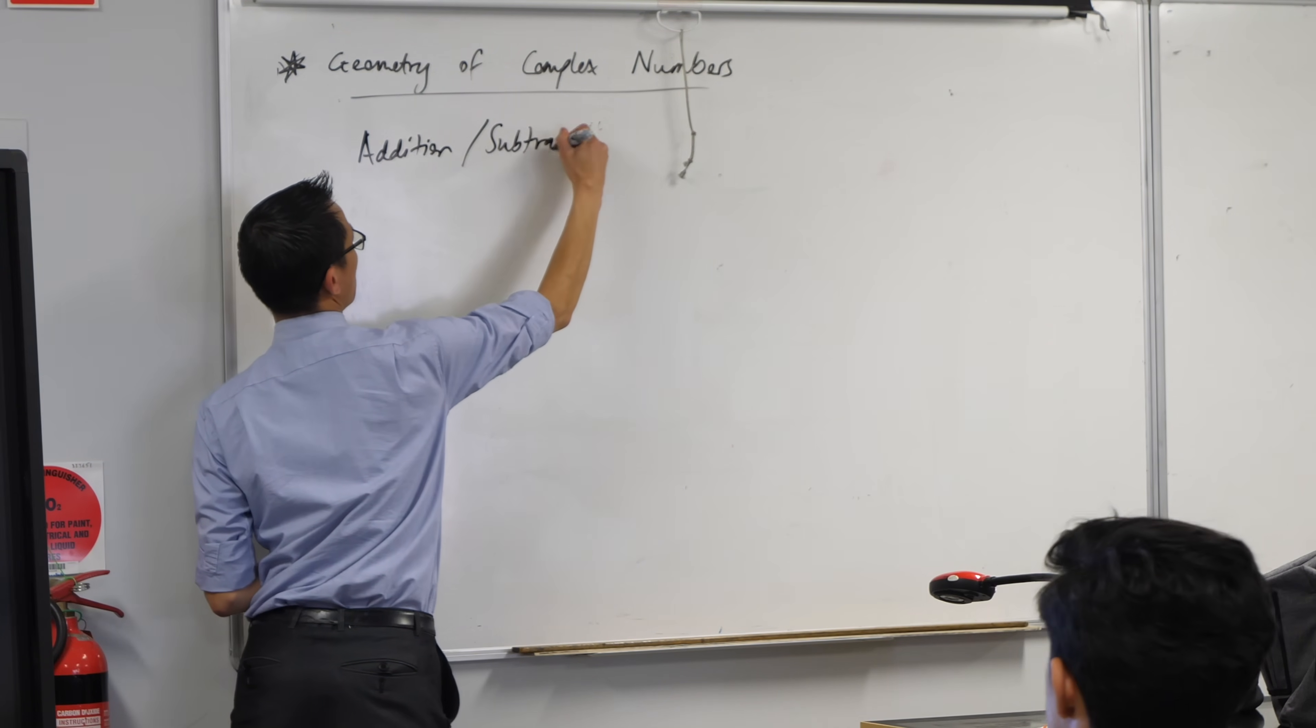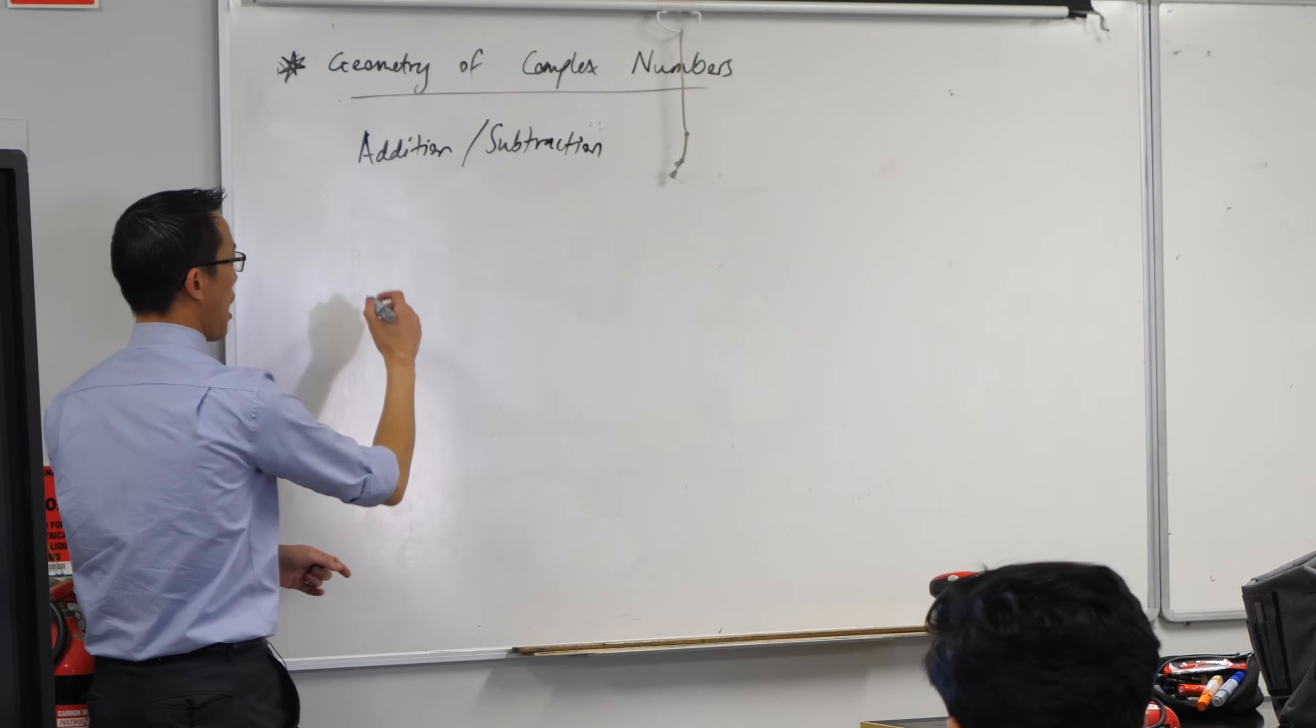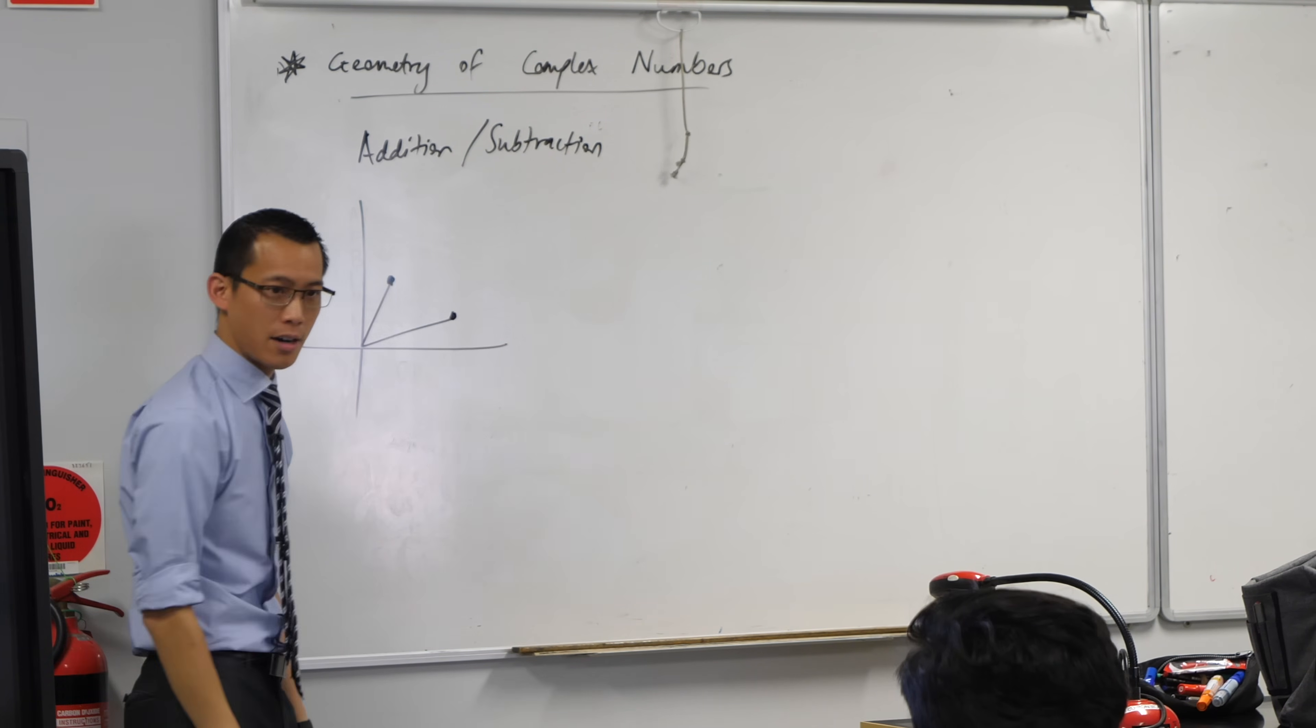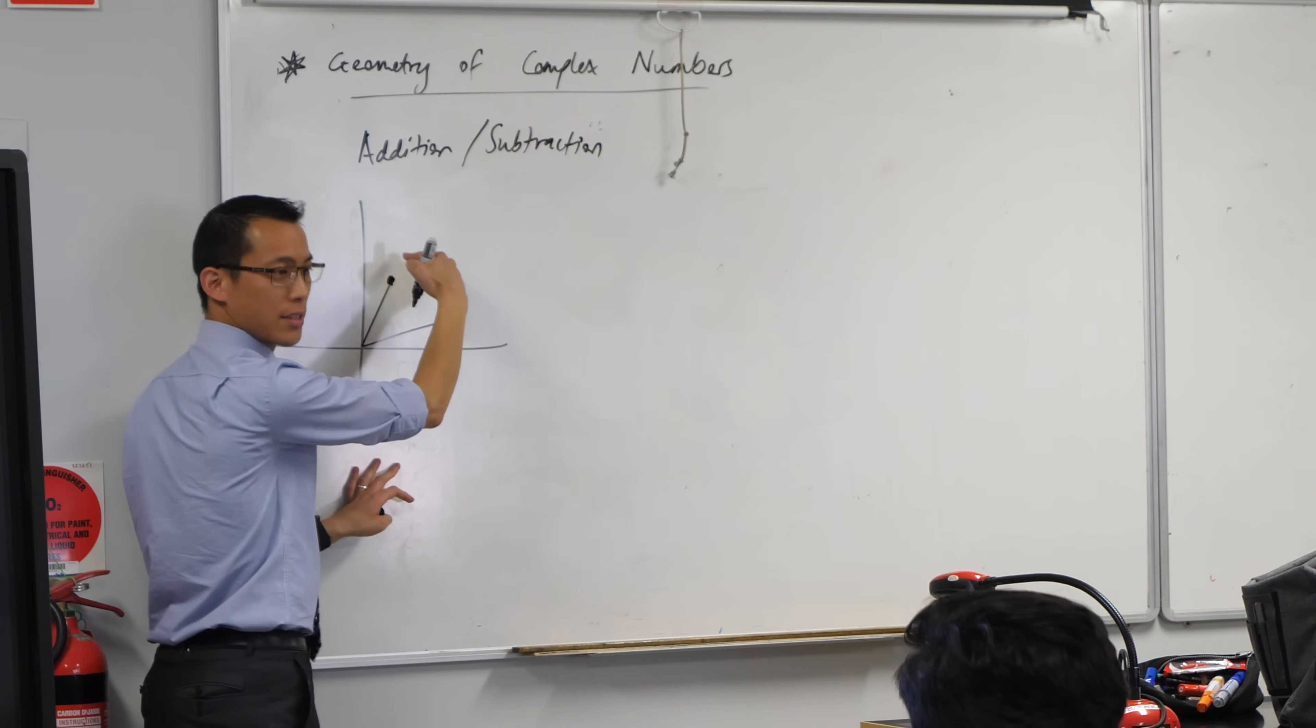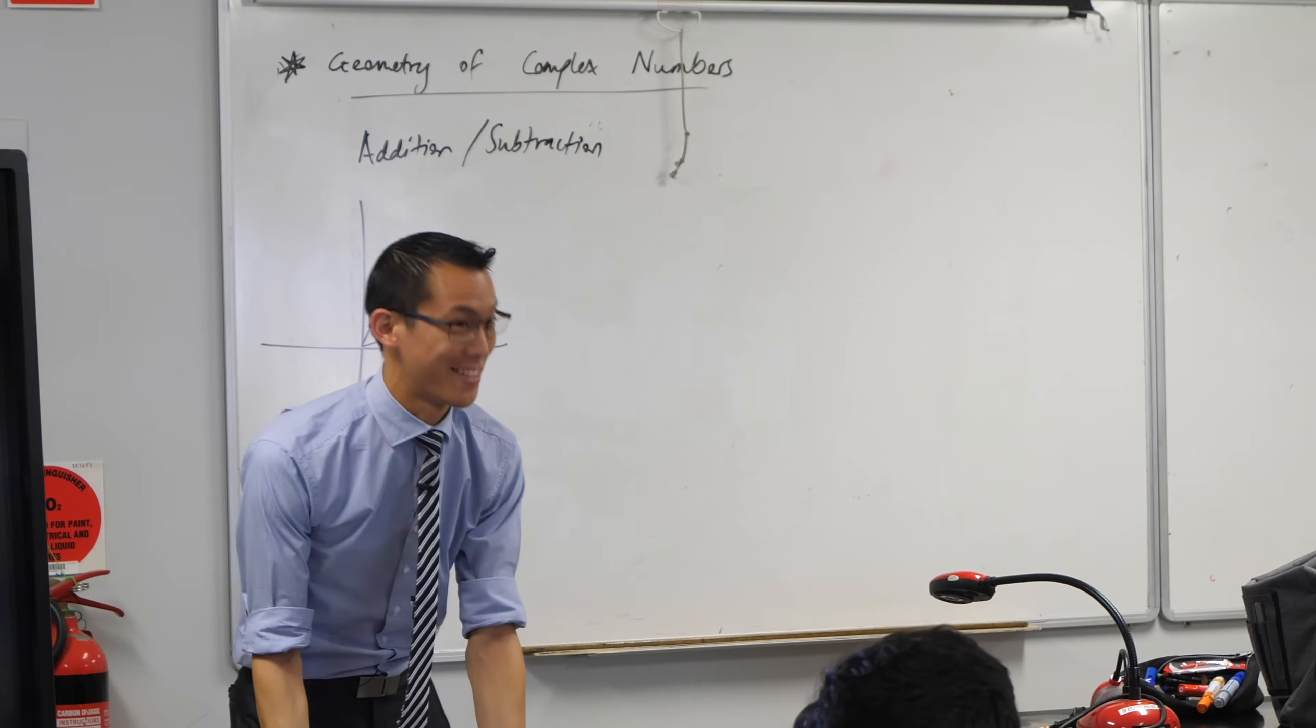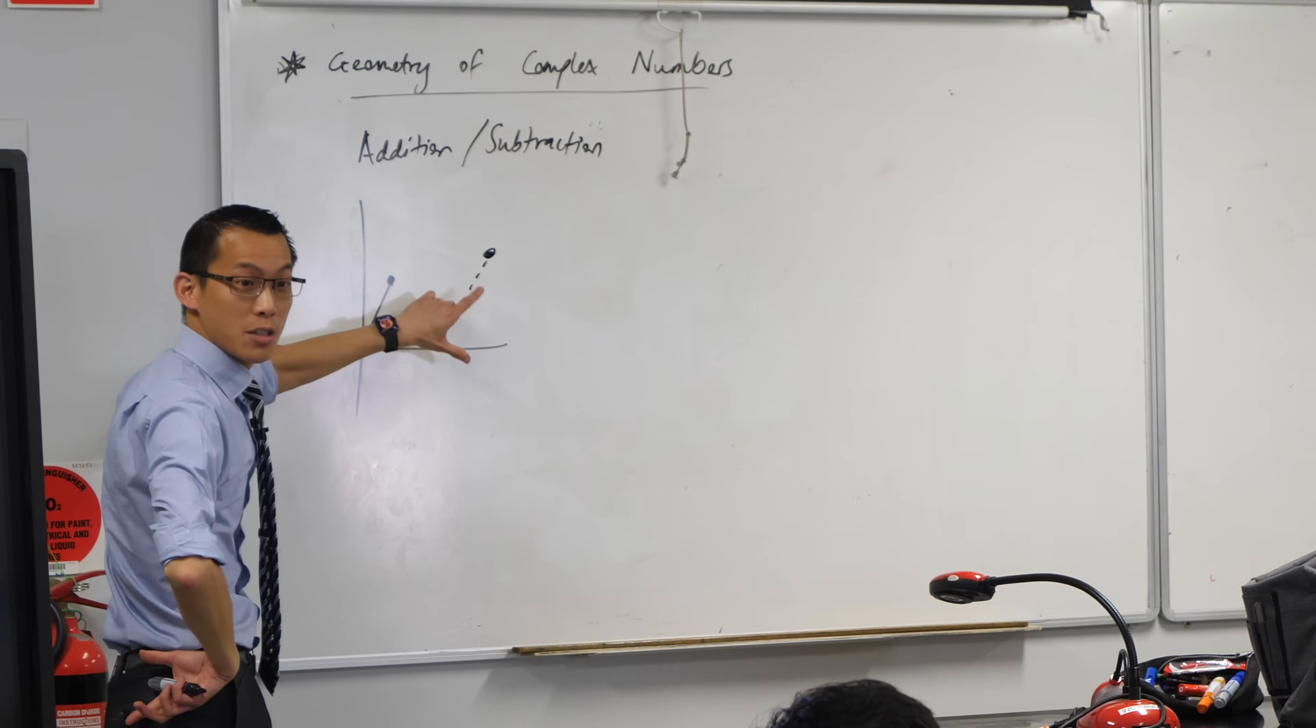Essentially, you are going to get, and on your diagram you've sort of already got this. If you've got on the complex plane one complex number here and then another complex number over here, to add them means to sort of do one after the other. So I would end up somewhere over here. You can picture that imaginary parallelogram. In fact, imaginary is exactly the right word for it. So that's what addition and subtraction does.